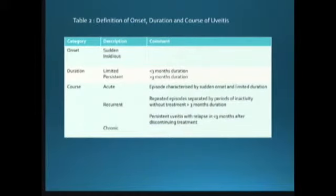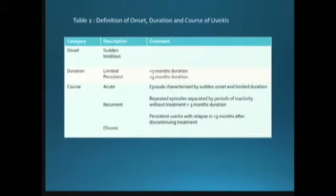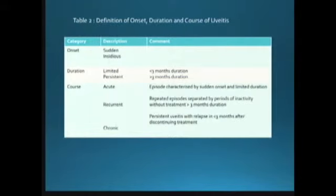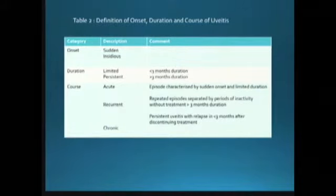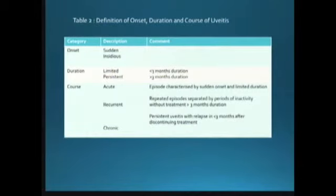You need to know if it is acute, recurrent, or chronic. In acute uveitis, it is an episode characterized by sudden onset and limited duration. Recurrent is repeated episodes separated by periods of inactivity without treatment for more than three months. In chronic uveitis, it is persistent with relapse in less than three months after discontinuation of treatment. In the clinic, you need to label what case you are dealing with — acute, chronic, or recurrent.